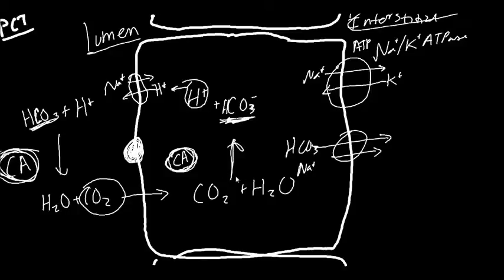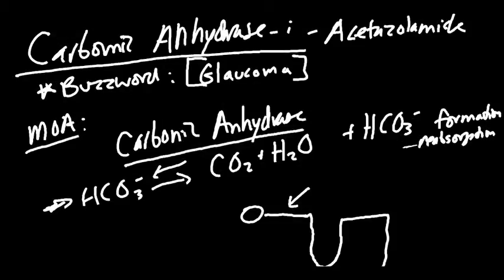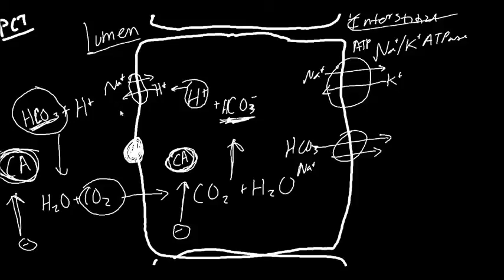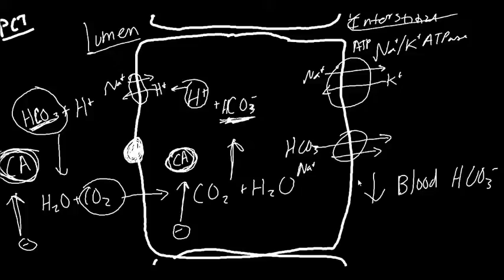If we inhibit carbonic anhydrase — either on the luminal side or inside the cell — that's exactly what a carbonic anhydrase inhibitor does. We lose the bicarbonate that's in the lumen because we can't convert it to CO2, bring it in, and reform it as bicarbonate to pump back. So inhibiting carbonic anhydrase decreases blood HCO3 — we lose part of that buffer system.